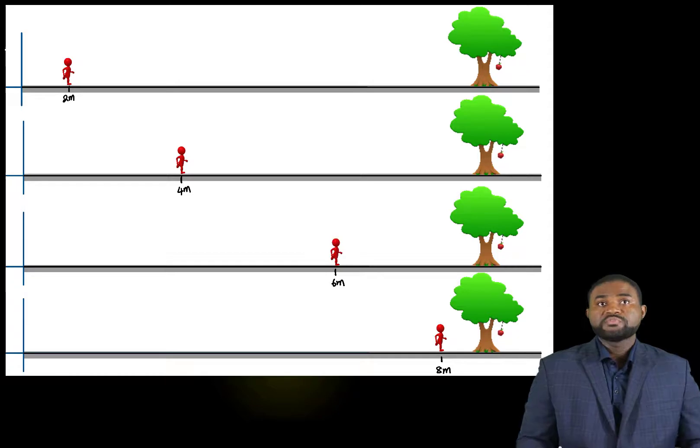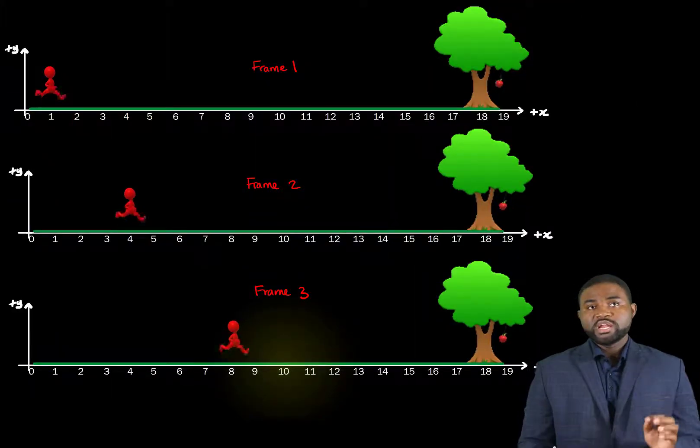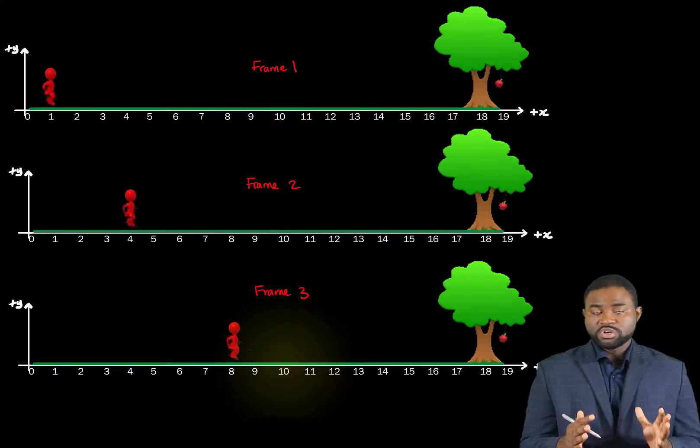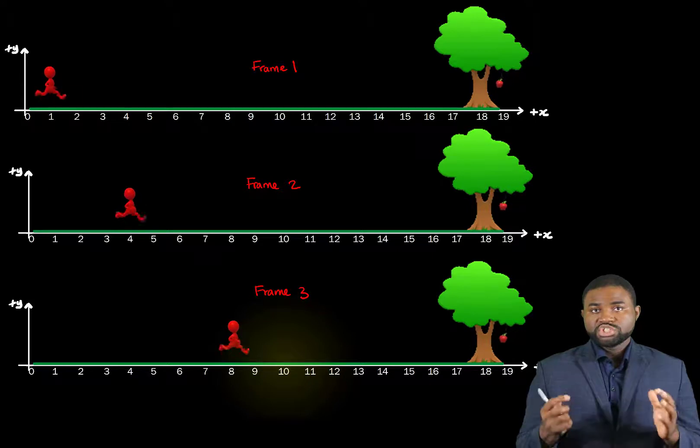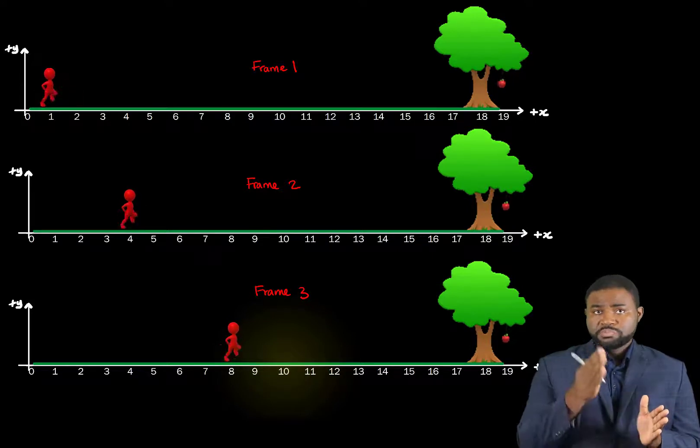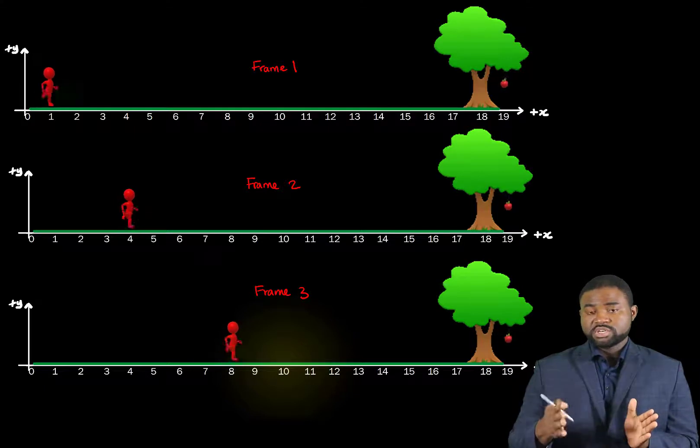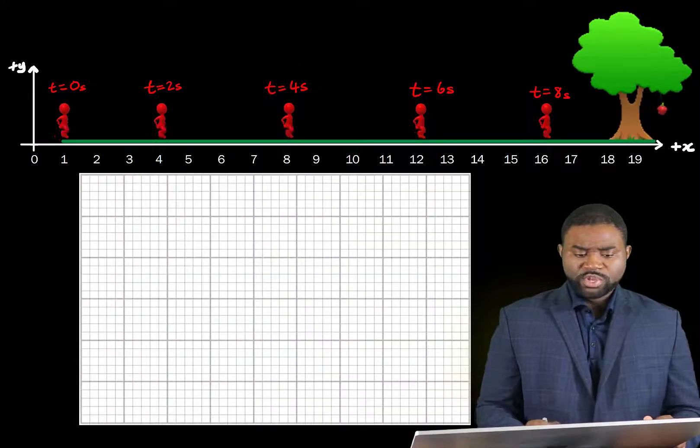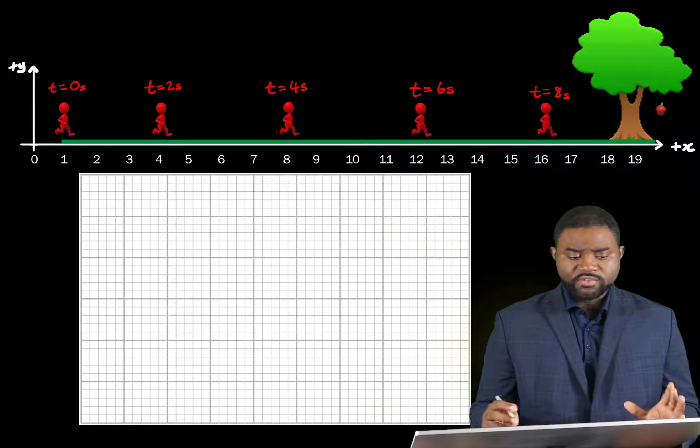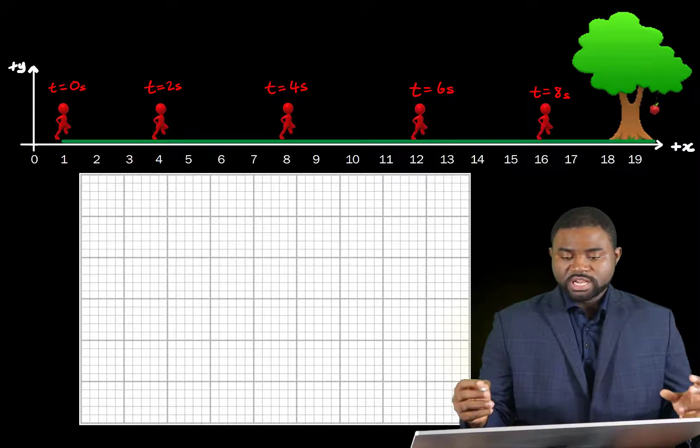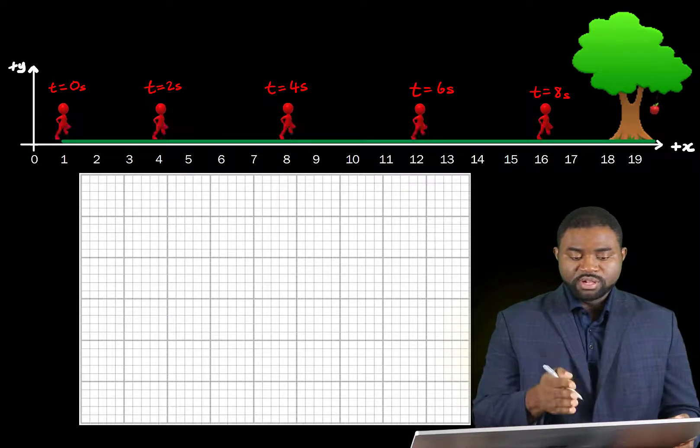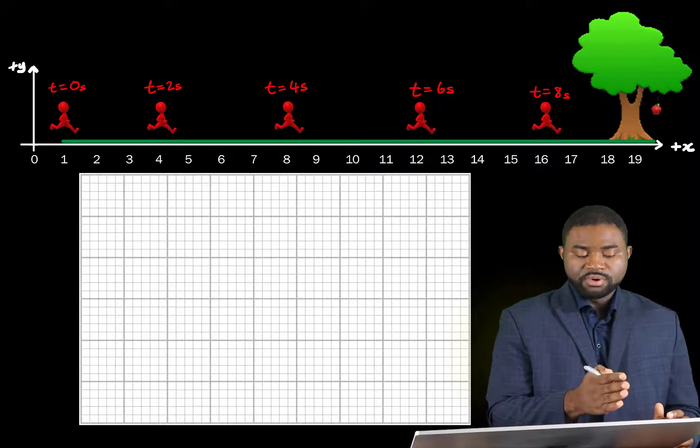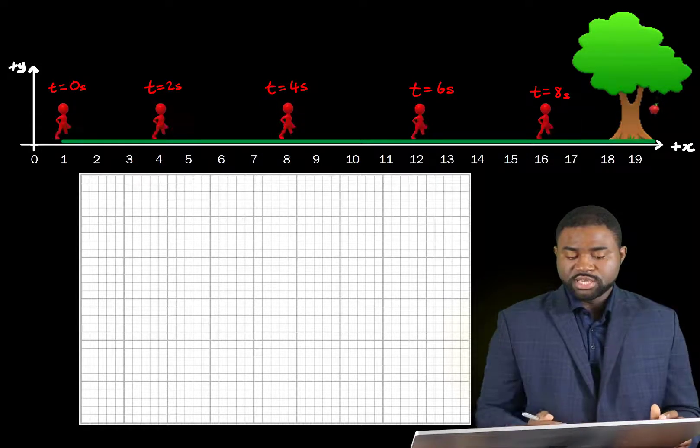What if we edit the video and then superimpose the frames on each other? The edited image showing his position at several equally spaced instances of time is what we call a motion diagram. So if we do that, we will have a diagram like this. This is an edited video that shows the running man at different positions, and remember that the time interval between each position is the same.